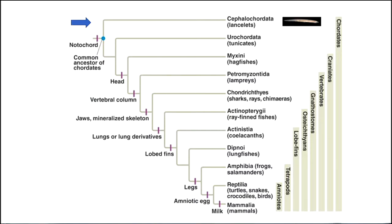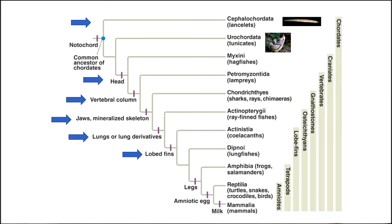Let's look at another phylogenetic tree. We can start out with cephalochordata, lancelets — it looks kind of like a worm and really doesn't have a head. That's at the base of this tree of chordates. Then there's something called a tunicate, very sessile at the bottom of the ocean, though it seems to have a head when it's young. After that we have the evolution of a head — everything to the lower right has a head: hagfishes, lampreys, sharks, etc. Then the vertebral column came along, then jaws and a mineralized skeleton, then lungs, then lobed fins, then legs, then an amniotic egg. Reptiles and mammals have that, and then mammals have milk.